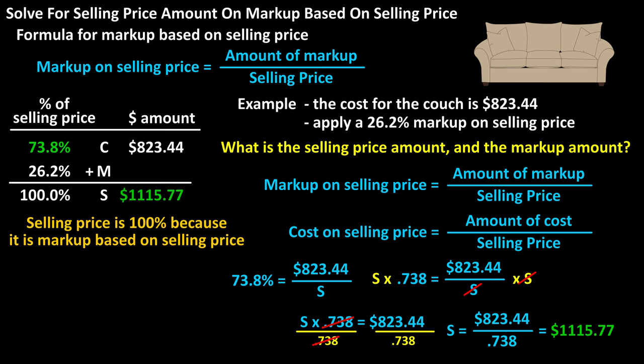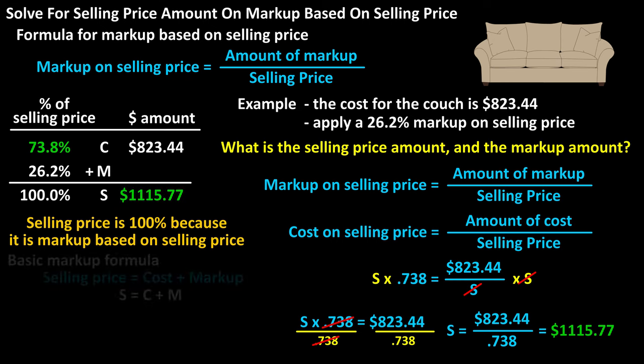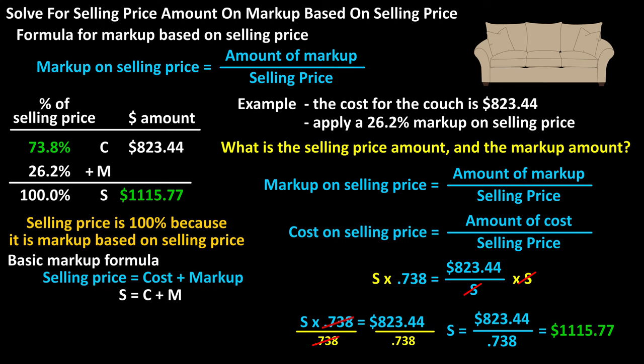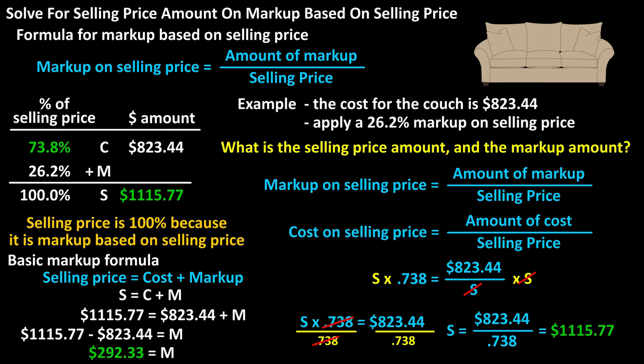Now to find the markup amount, we can use the basic markup formula: selling price equals cost plus markup. From what we now know, we have $1,115.77 equals $823.44 plus markup. Solving for markup, we get the markup amount equals $292.33, which we can put in the table. And that answers the second question.